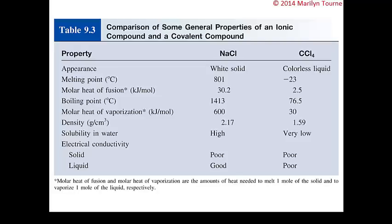Looking at the differences: sodium chloride has a melting point of 801°C, whereas carbon tetrachloride melts at negative 23°C — much easier to melt. It's also a lot harder to vaporize sodium chloride compared to carbon tet.